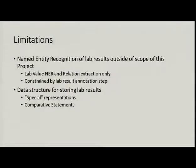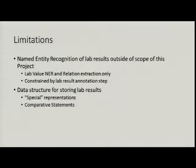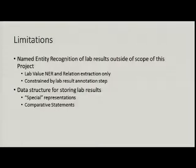There are several limitations in this project. Named entity recognition of lab results is outside the scope — we only seek to extract lab values and their relation back to lab results. But in a practical context, lab results must be extracted as well, because a value like 35% doesn't mean anything unless it's associated with a hematocrit lab. This means that in a practical application, we can only perform as well as the lab result annotator. Even if we achieve perfect extraction, if the lab result annotation only performs at 60%, the entire workflow will only perform at 60%.